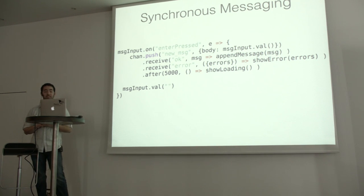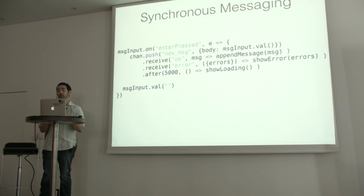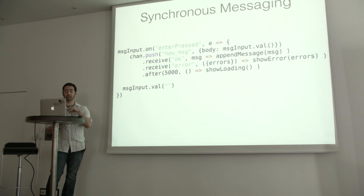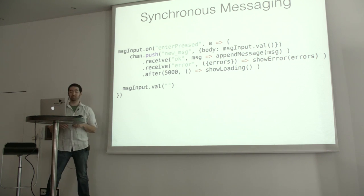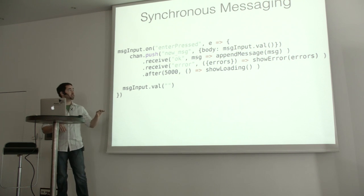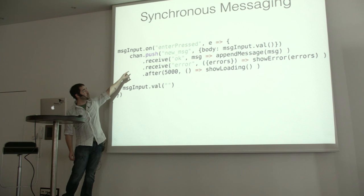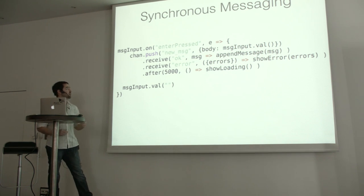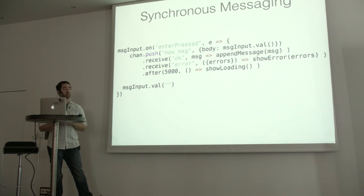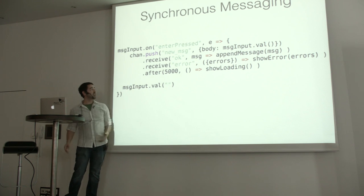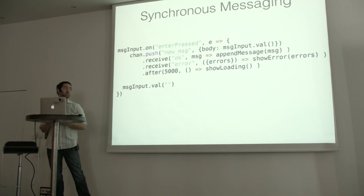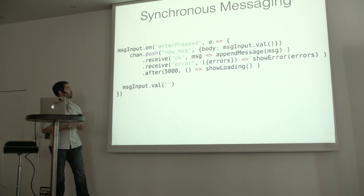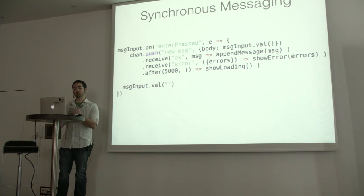Here's the fake pattern matching. From ElixirConf US there was no way to send a message to the server and then actually respond to that specific event. Now we can get fake pattern matching in JavaScript. I can push a message to the server, and if I receive 'ok' — just like I'm running Elixir code — I run a callback and get the message, appending it to my chat application. If I receive 'error', I can destructure the error messages and show them to the user. And I can even say: after a certain number of seconds, assume the message is lost and show a loader on the client. It's like we brought a little bit of Elixir to JavaScript.